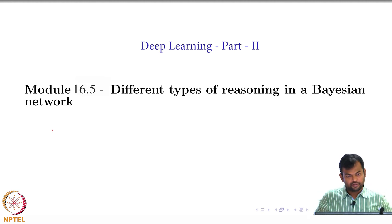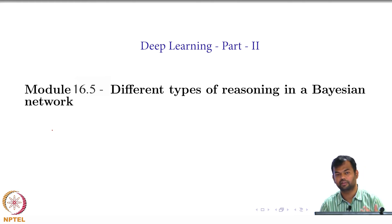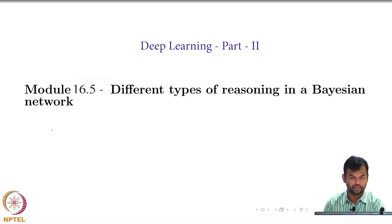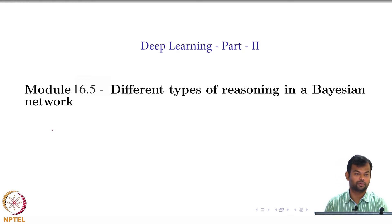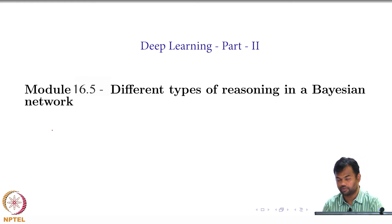This next module is meant to motivate why you need joint distributions and what kinds of reasoning you can do with them. These are important things you can think of in various applications, which is why you need a joint distribution as opposed to just learning the conditional distribution—for example, probability of oil given all other factors. If you have the joint distribution, you can do much more reasoning on top of it.